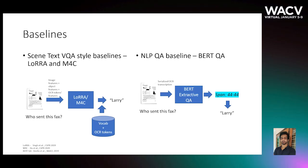In the next few slides, we will see the baselines we use in our experiments, the results, and a few qualitative examples. We try out two types of baseline models: LoRa and M4C. Both these models are developed for scene text VQA, which is essentially the standard VQA setting, but reading the scene text on the images is also critical to answering the questions.